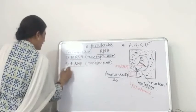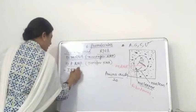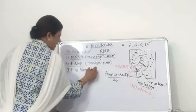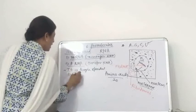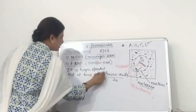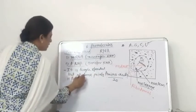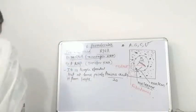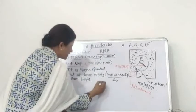tRNA is a single-stranded structure, but at some points it forms loops. The structure of tRNA is in the form of a cloverleaf-like structure.